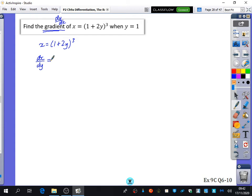Because it's blah cubed, we know that that will go to 3 blah squared multiplied by the derivative of blah, which is 2. So we get 6(1 plus 2y) squared. And we've been told that y is equal to 1. And so the gradient is going to be 6 multiplied by (1 plus 2) squared, which is 6 times 9, which is 54.